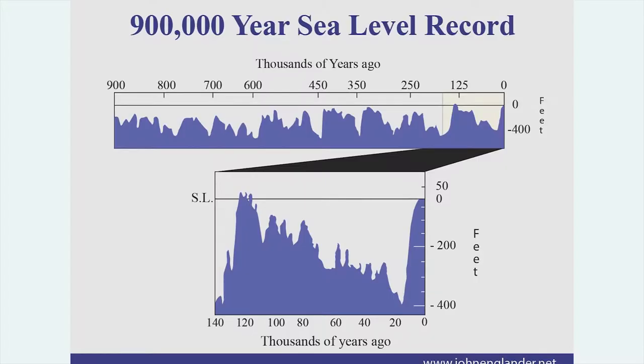We've had an ice age for pretty much the last five million years, about every hundred thousand years. And that top graph shows almost a million years — 900,000. It shows the pattern of the ocean in blue going up and down, and then the lower part does a blow-up of the last ice age cycle, the most recent 140,000 years.